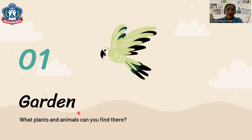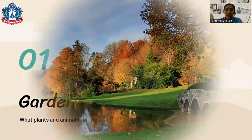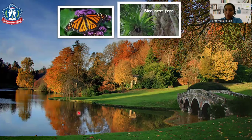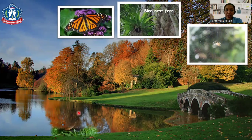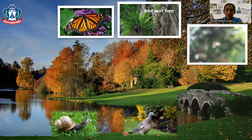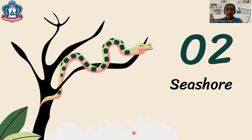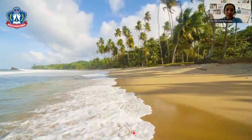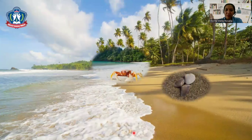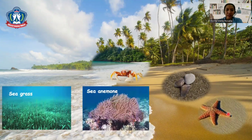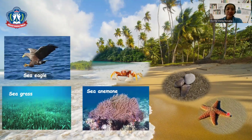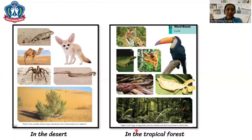Another example: the garden. What plants and animals can you find here? You can find butterfly, bird, spider, snail, dove, and owl. How about the seashore? You can find crab, shells, starfish, sea animals, sea grass, and sea eagle.